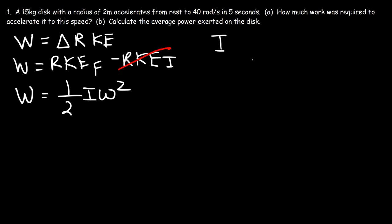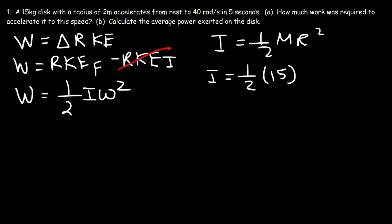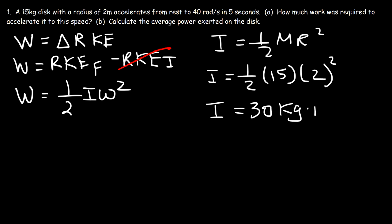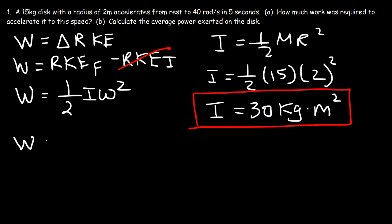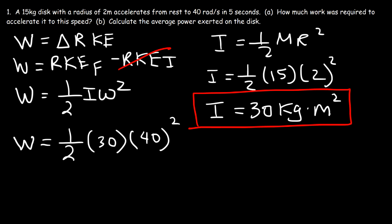First, let's calculate the inertia of a disc, which is 1/2 mr squared. We have the mass of 15 kilograms and radius of 2. Two squared times 15 is 60, and half of 60 is 30. So the inertia is 30 kilogram·meters squared. Now for the work: it's 1/2 times the inertia of 30 times the final angular speed of 40 squared. Forty squared is 1600, times 30 times 0.5. So the work done to accelerate it to this speed is 24,000 joules.